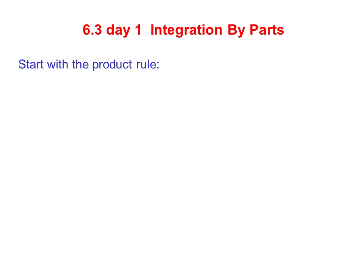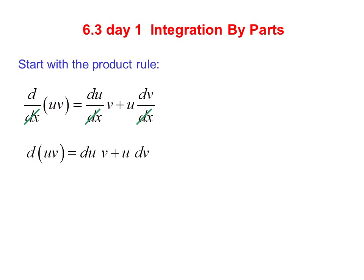We start with the product rule: d/dx(uv) equals du/dx times v plus u times dv/dx. We can eliminate the dx's and get d(uv) equals du·v plus u·dv. If we rearrange and subtract, we get d(uv) minus v·du equals u·dv.